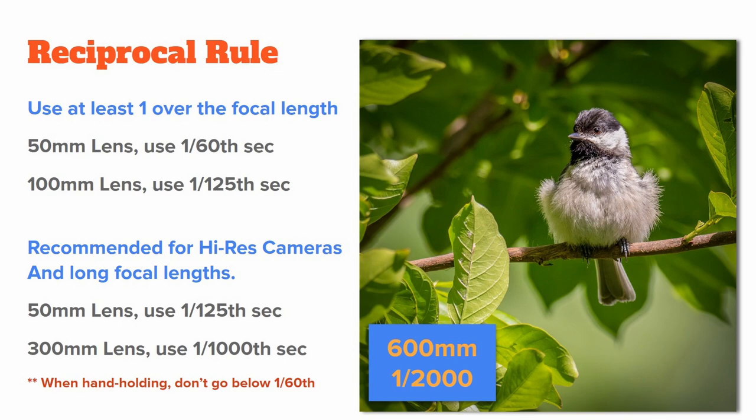I wanted to pick up where we left off on the reciprocal rule because I didn't talk about image stabilization built into many cameras today. Some cameras have stabilization built into the lens, others have it built into the body, and sometimes these things work together. This can mitigate a lot of camera shake when hand-holding, so you can still get tack-sharp images even at very low shutter speeds.